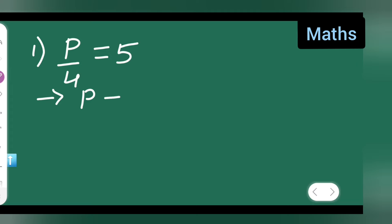So, P is equal to 5 and this denominator will go up. You have to multiply with 5. So, it will be multiplied by 5. So, 5 multiplied by 4 is what?